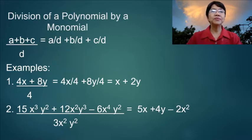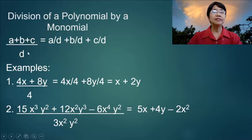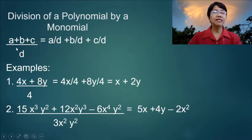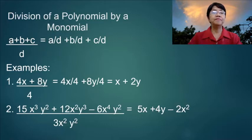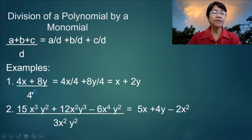Let's move on to division of a polynomial by a monomial. The polynomial a plus b plus c divided by d is equal to a over d plus b over d plus c over d, which means that the divisor is distributed to each term of the dividend. Example: 4x plus 8 over 4 — we distribute 4, so 4x over 4 equals x and 8 over 4 equals 2.